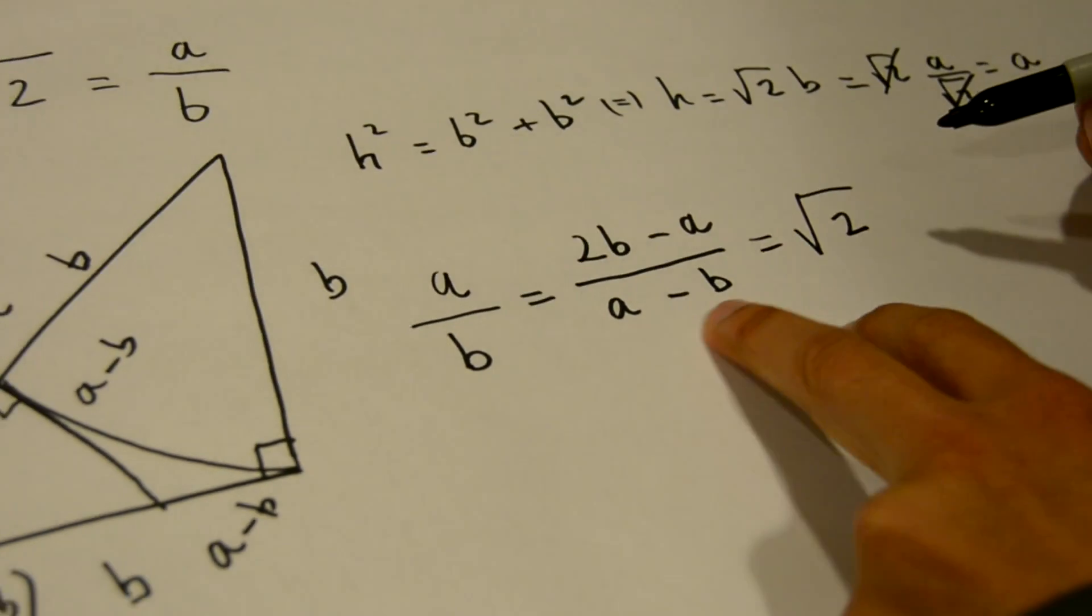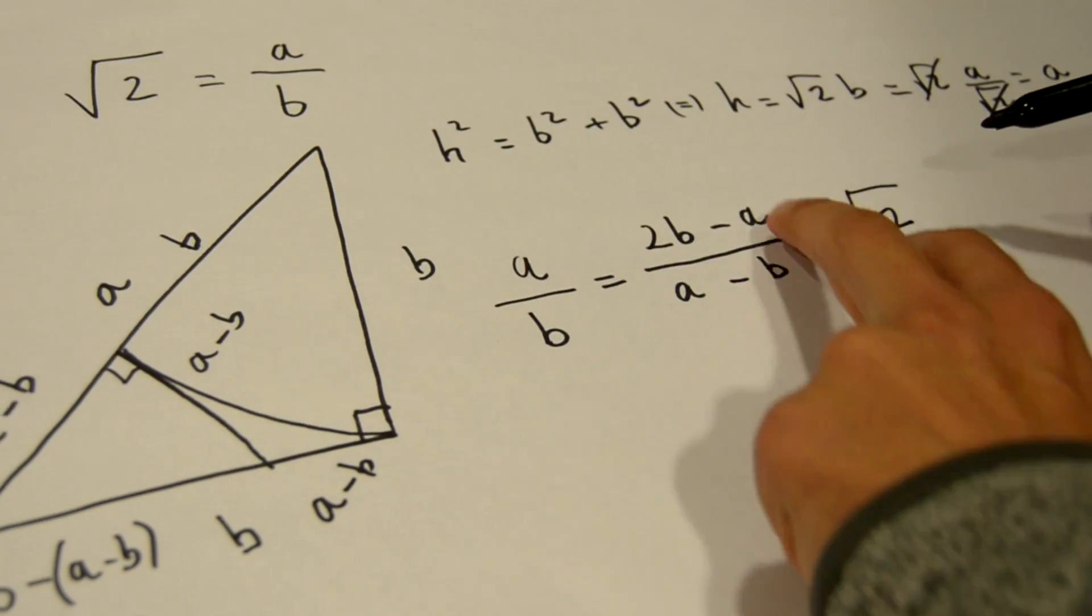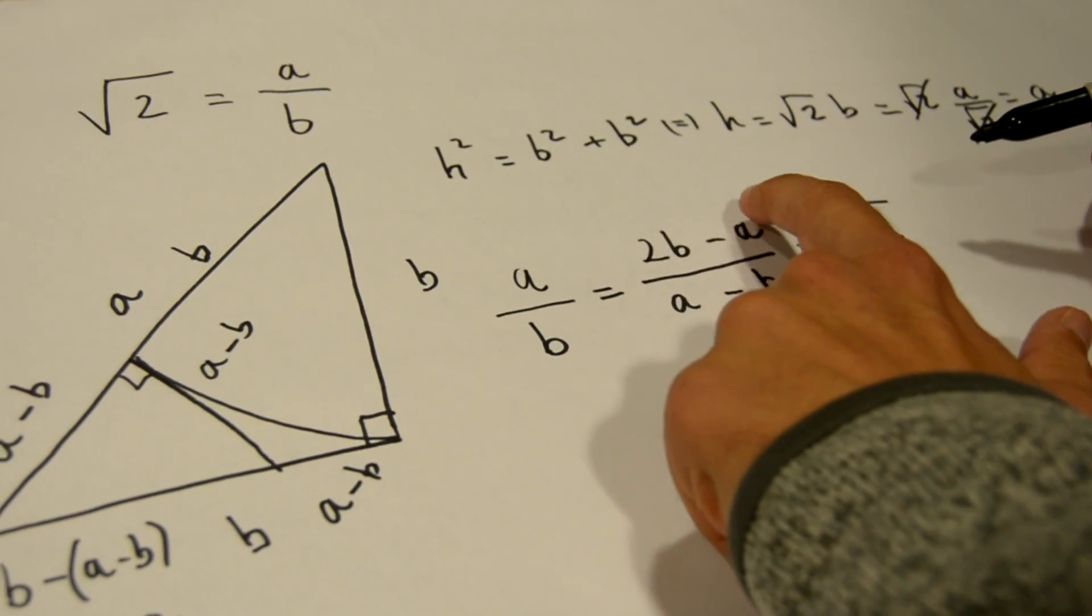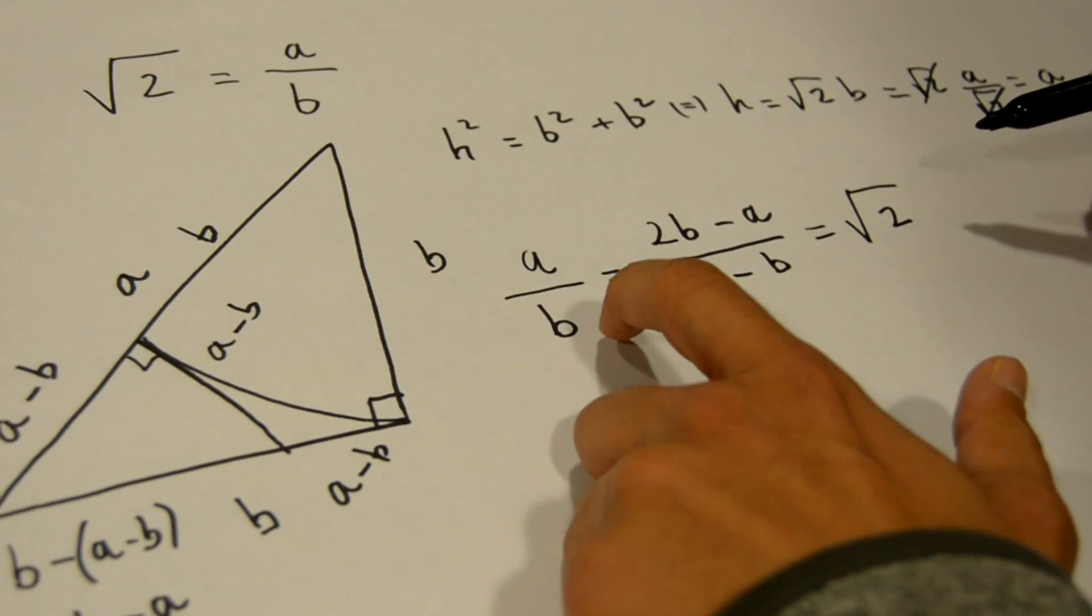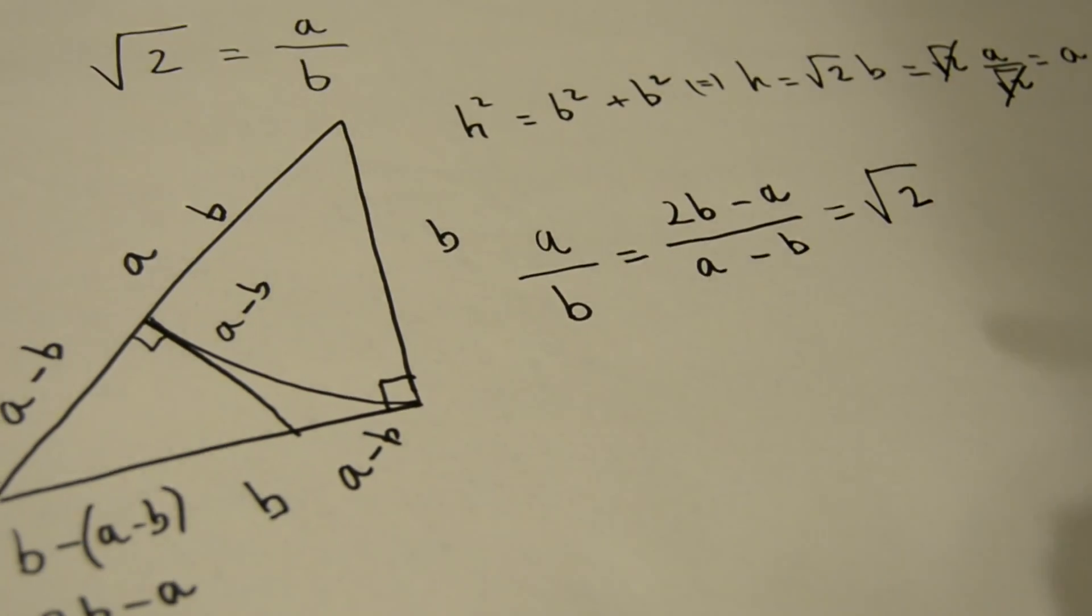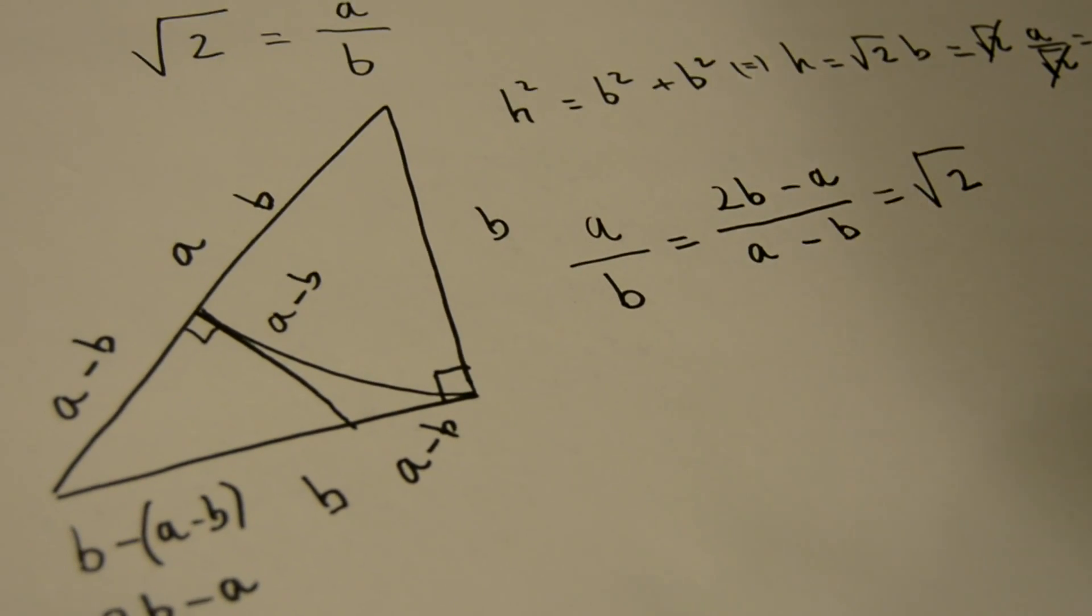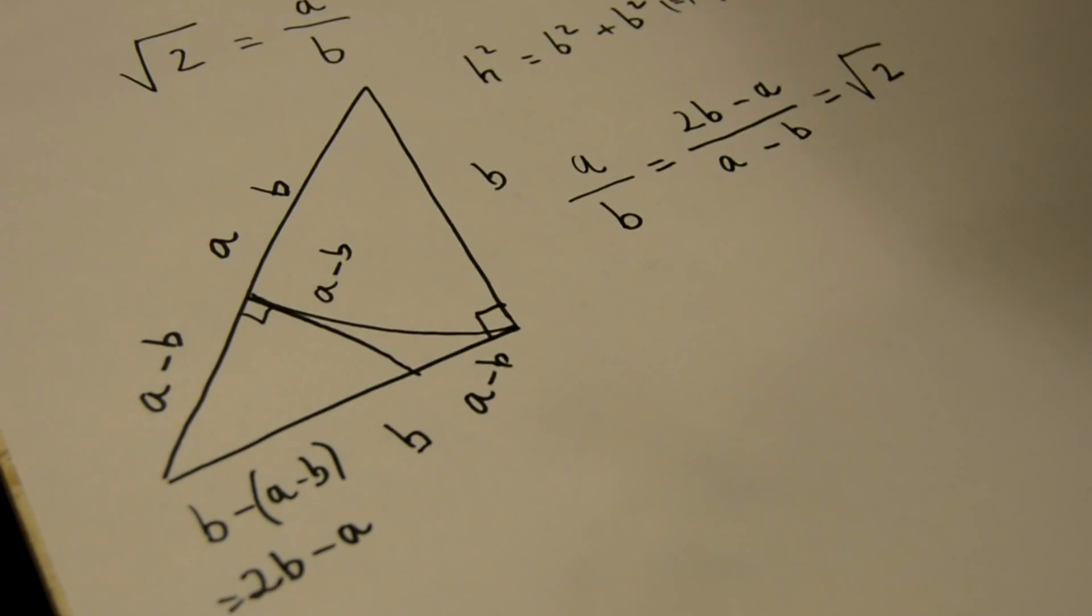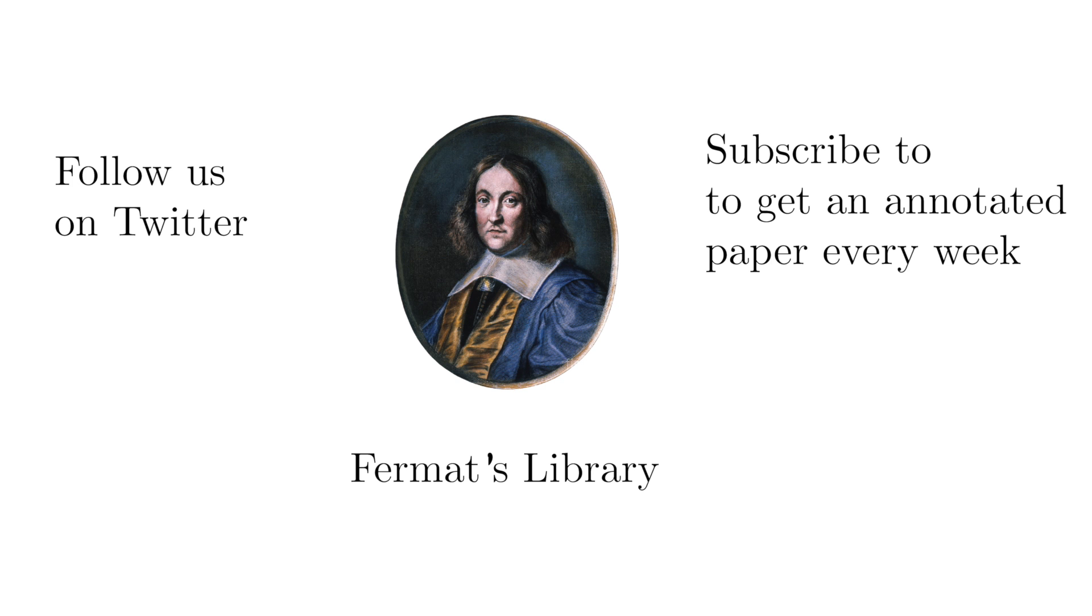but now we've shown that a minus b and 2b minus a can be used to express the square root of 2, and these integers are smaller than a and b. So we've reached a contradiction, which means that the square root of 2 cannot be a rational number - it has to be irrational. Thanks for watching this video. If you enjoyed it and want to watch more videos like this, please subscribe to the channel.